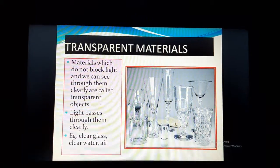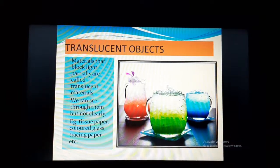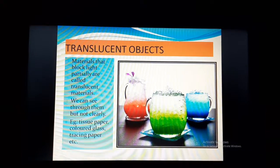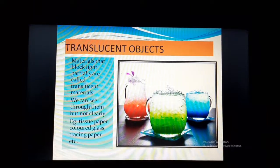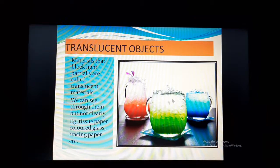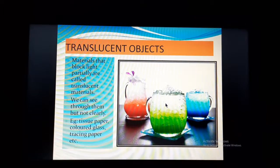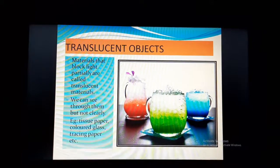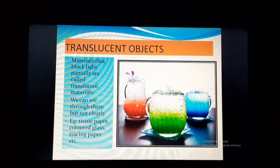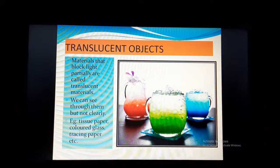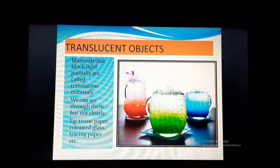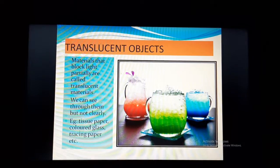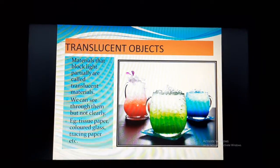Now we will discuss about the next type of objects, that is translucent objects. Examples include colored glass — the pictures I have shown are actually colored glass, through which light can pass, but not as clearly or completely as it passes through transparent objects. Materials that block light partially are called translucent materials. Please learn this as your definition, as it can come in your exam.